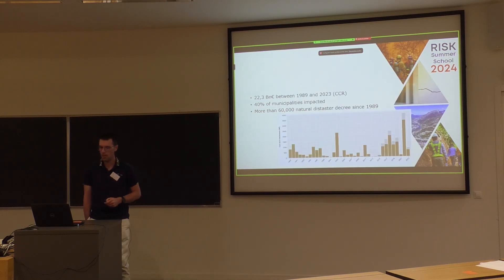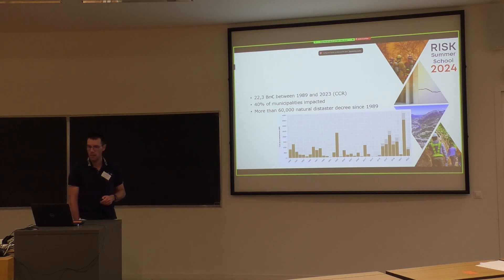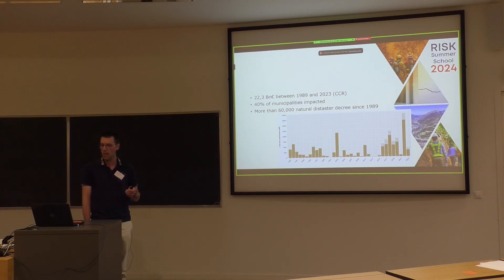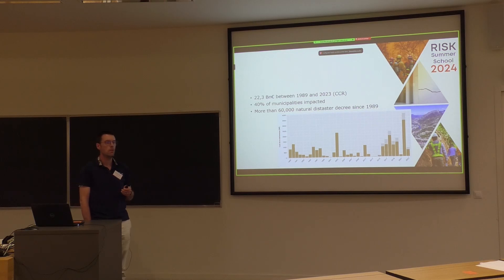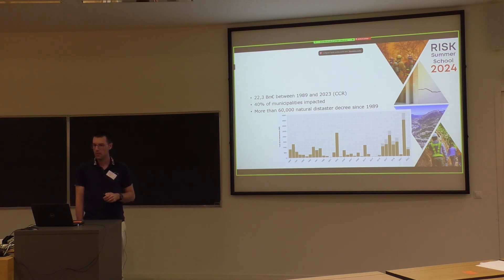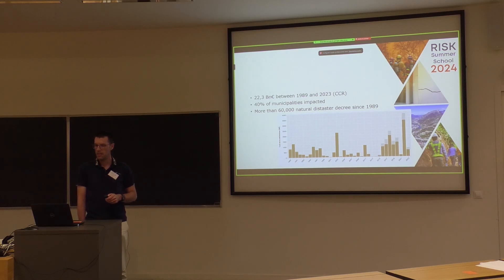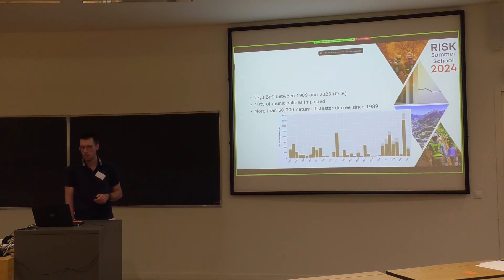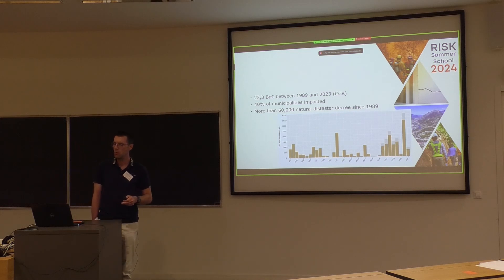Some figures — Lamine gave us some, more or less the same, presented differently. Since 1989, shrinking and swelling clays have cost more than 22 billion euros under the natural catastrophe regime in France. It's around 40% of municipalities that have been impacted, and more than 60,000 natural disaster decrees since 1989 — that's between two and three decrees per municipality on average.